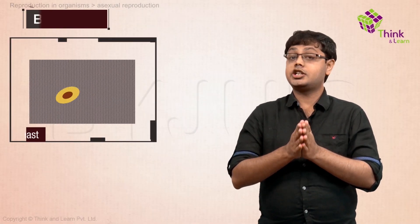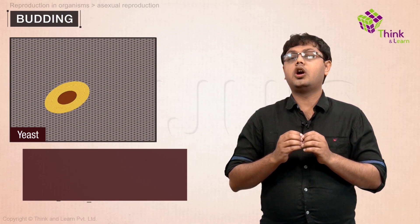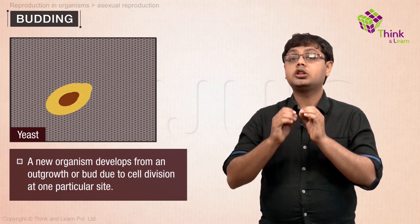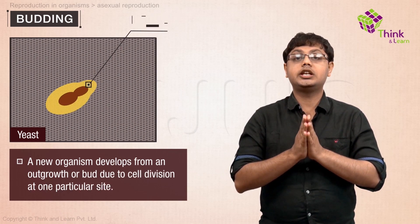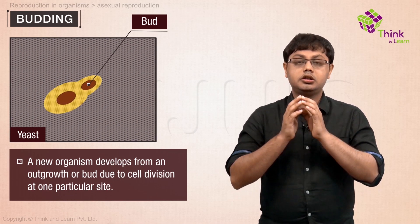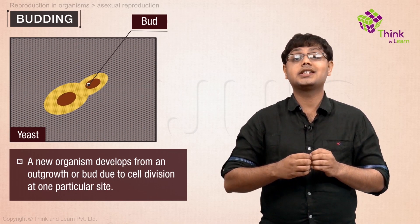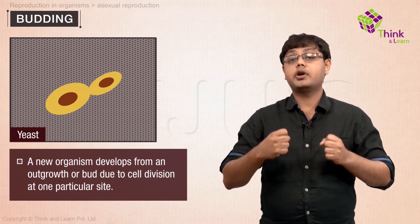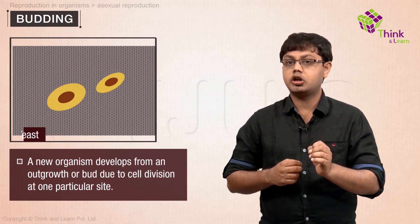Budding is a form of asexual reproduction in which a new organism develops from an outgrowth or bud due to cell division at one particular site. The new organism remains attached as it grows, separating from the parent organism only when it is mature.